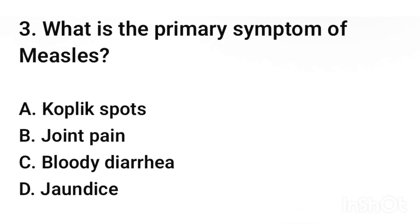Question number three. What is the primary symptom of measles? The correct answer is option A: Koplik spots.